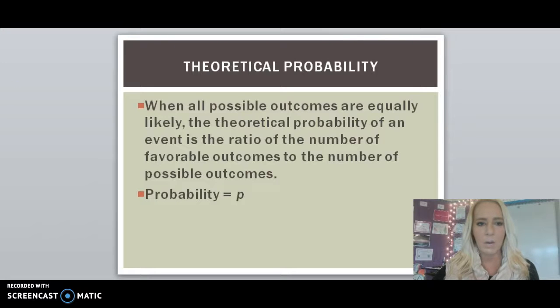So let's first talk about what theoretical probability consists of. When all possible outcomes are equally likely, the theoretical probability of an event is the ratio of the number of favorable outcomes to the number of possible outcomes. So it's a comparison of the number of favorable outcomes to the number of possible outcomes. And in our probability equation, we use P to equal probability.